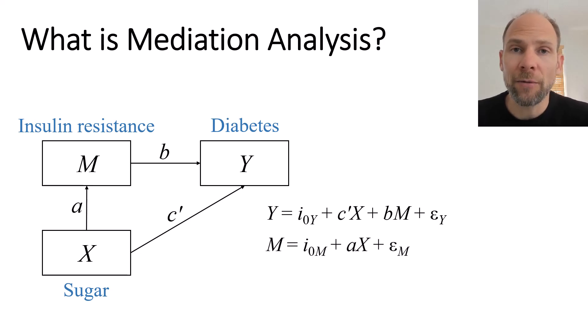And then we also have an equation for M because M is dependent on X. So sugar causes insulin resistance. There's a second equation for M which is a bivariate regression equation with an intercept term i0M and then an a coefficient for the linear relationship between X and M. And then there's also an error term εM for M.